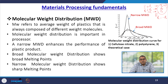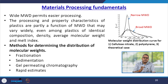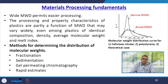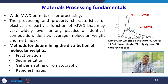A narrow molecular weight distribution enhances the performance of the plastic product. Broad molecular weight distribution shows a broad melting point, and narrow molecular weight distribution shows a sharp melting point. Wide molecular weight distribution permits easier processing. Methods for determining the distribution include fractionation, sedimentation, gel permeation chromatography, and rapid estimate techniques — this analysis must be carried out before processing to assess whether the polymer is processable.